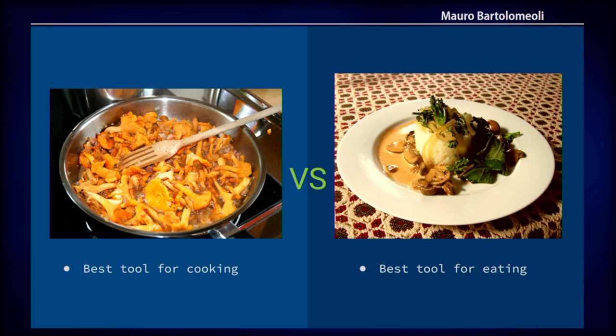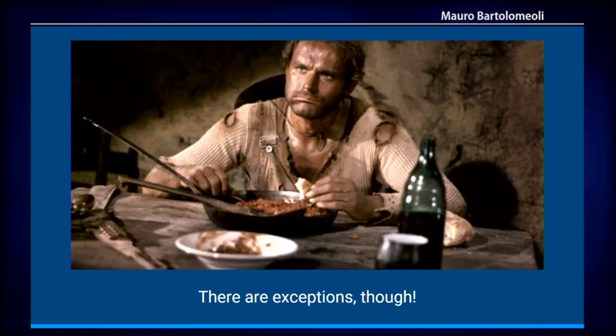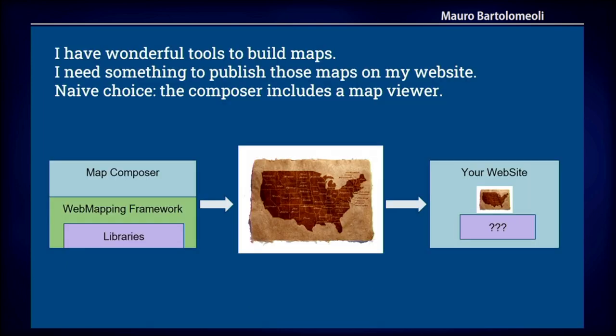For example, if you need to cook something, there is a tool that is best for that job. And if you want to eat the same food, probably another tool is the best one. Let's come back to maps — what is the best tool for cooking maps?